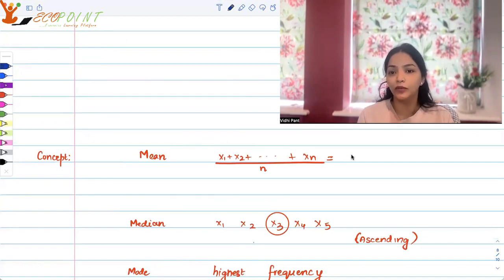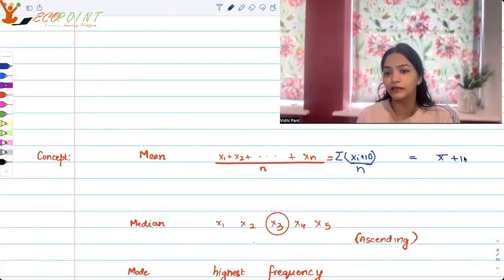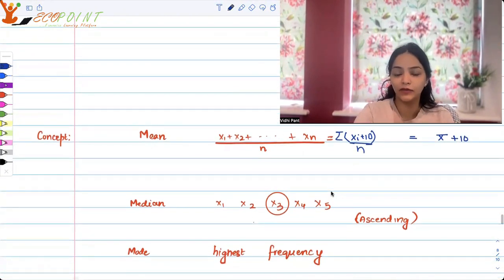Mean is something that we've already spoken about with the change in observation. So if each observation is xi plus 10, then your mean will be x bar plus 10. 10 is the grace mark.